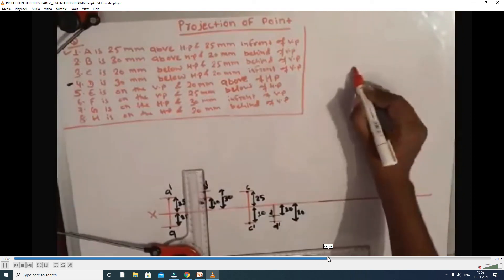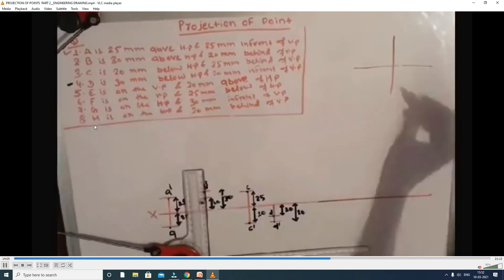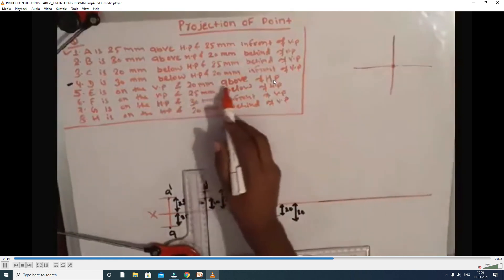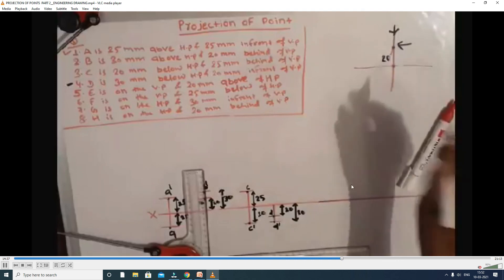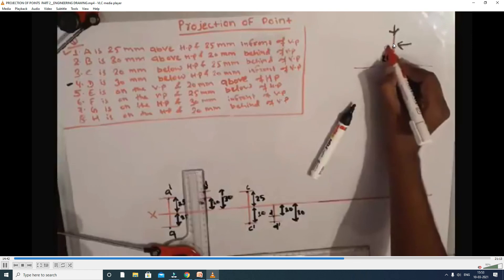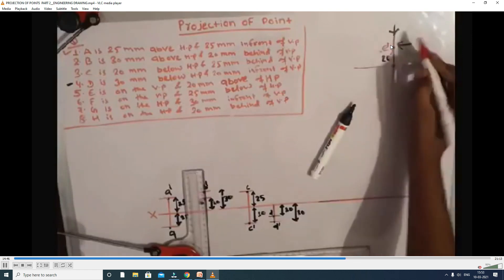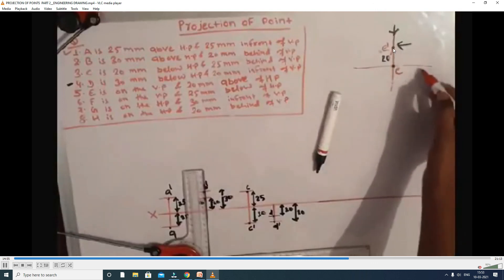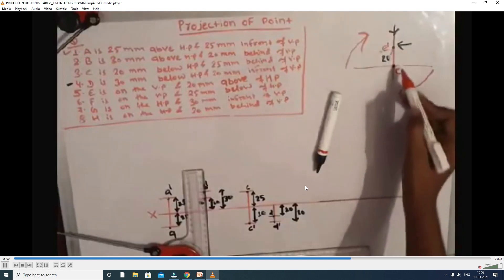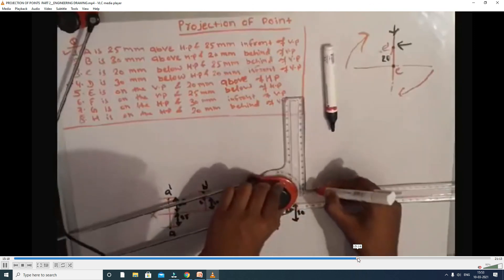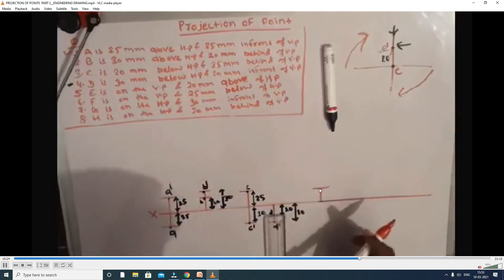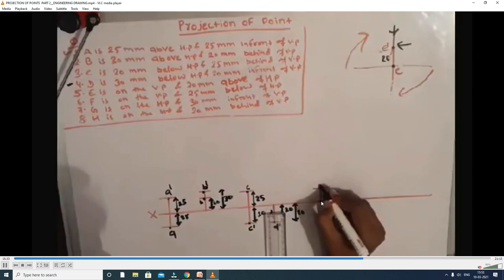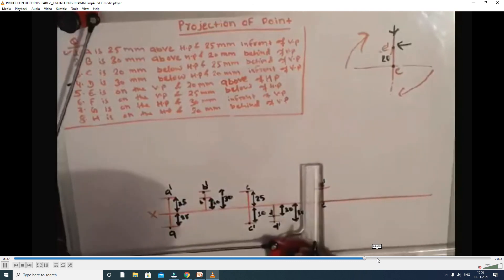Fifth: point E is on VP and above HP — 20 mm above HP, on VP means no distance from VP. HP rotates 90 degrees. The front view and top view are shown accordingly on the diagram. On VP and above HP.